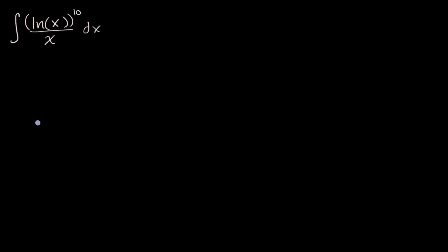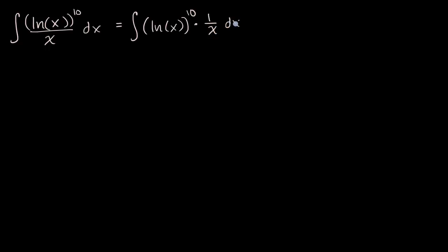Well, the key for u substitution is to see: do I have some function and its derivative? And you might immediately recognize that the derivative of natural log of x is equal to one over x. To make it a little bit clearer, I could write this as the integral of natural log of x to the 10th power times one over x dx.